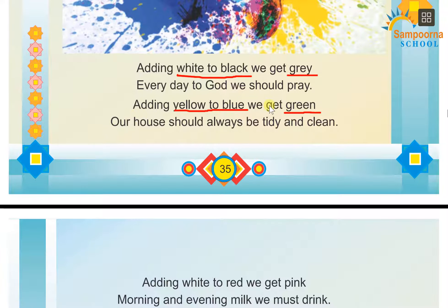Adding yellow to blue, we get green. Our house should always be tidy and clean. If we have white color mixed with black, we get gray — that is slaty color, means gray color. And every day we have to pray.